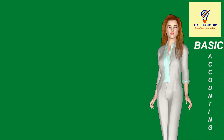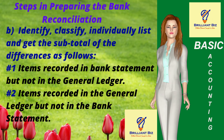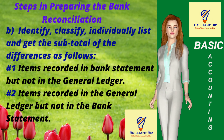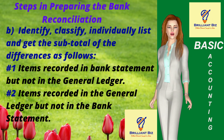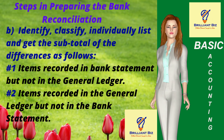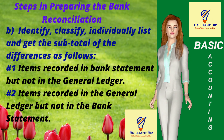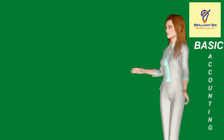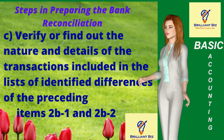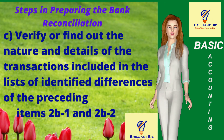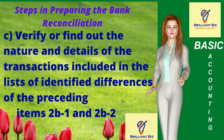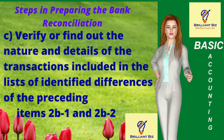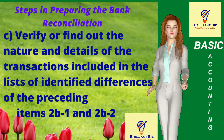Step 2B: Identify, classify, individually list, and get the subtotal of the differences as follows: (1) items recorded in the bank statement but not in the GL, and (2) items recorded in the GL but not in the bank statement. Step 2C: Verify or find out the nature and details of the transactions included in the lists of identified differences from the preceding items 2B.1 and 2B.2.